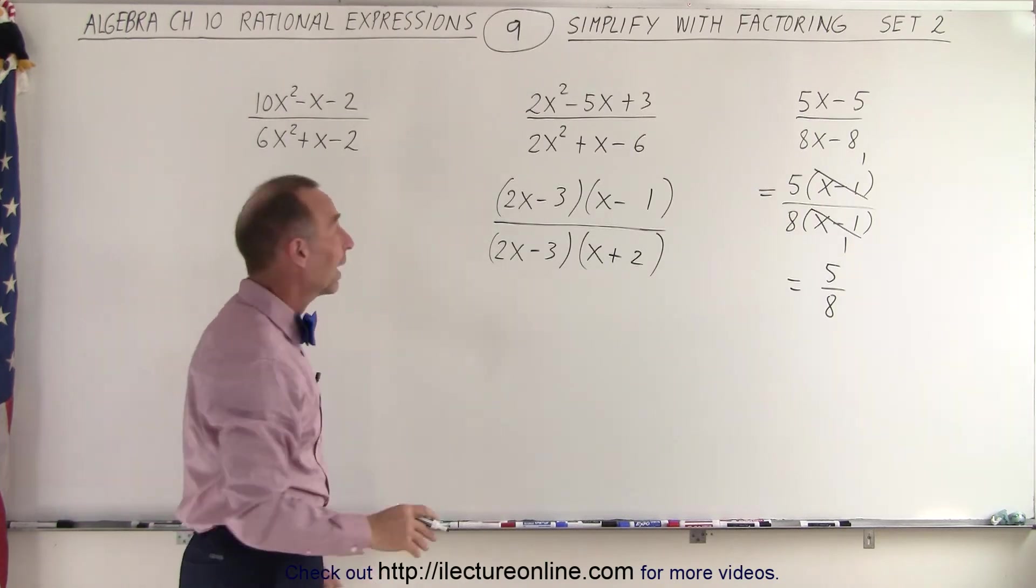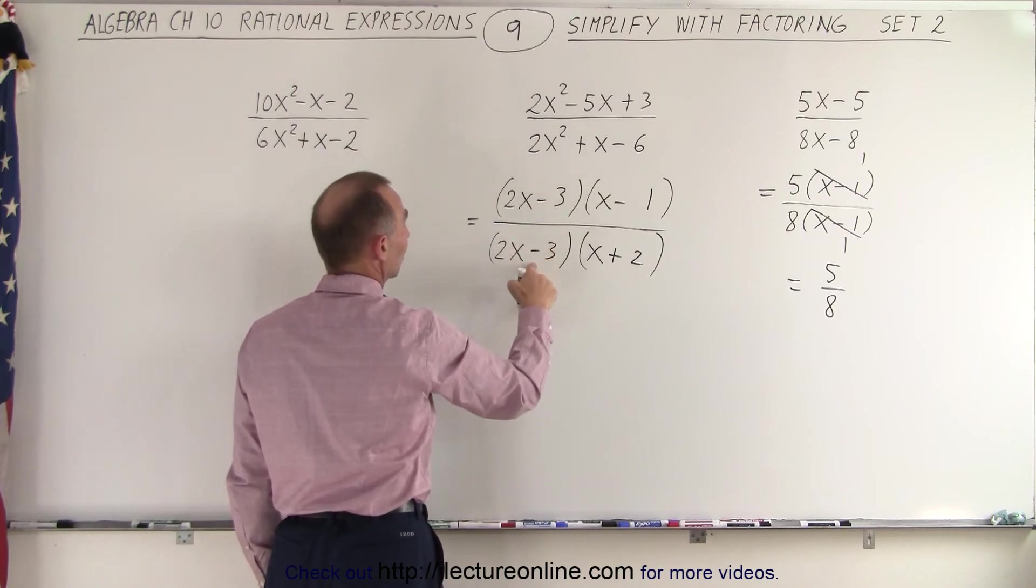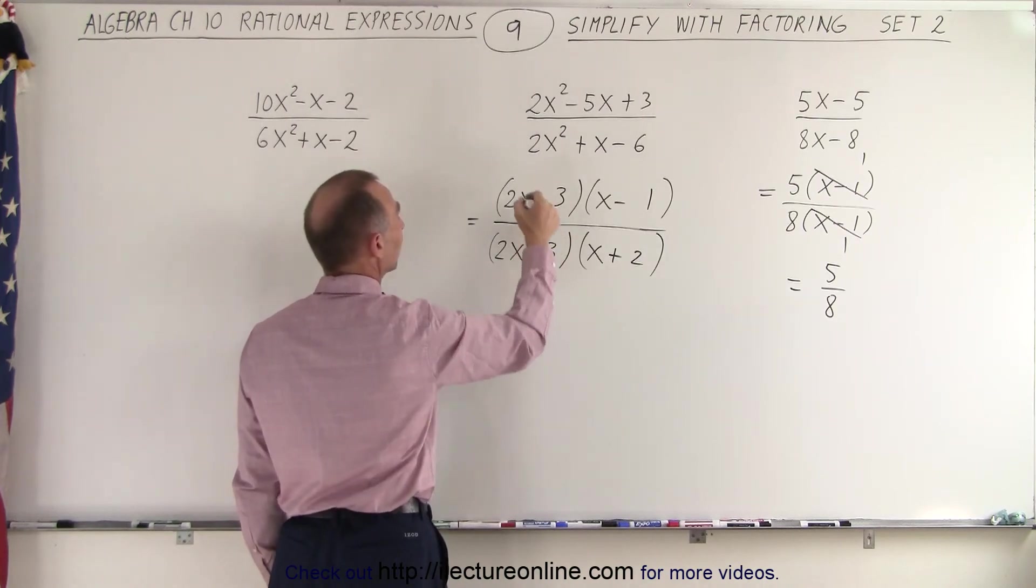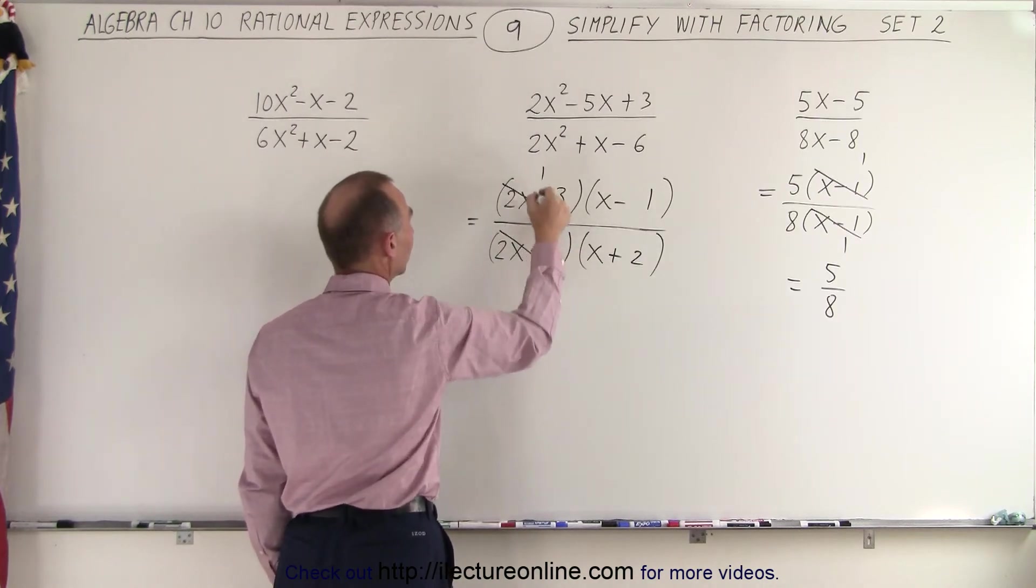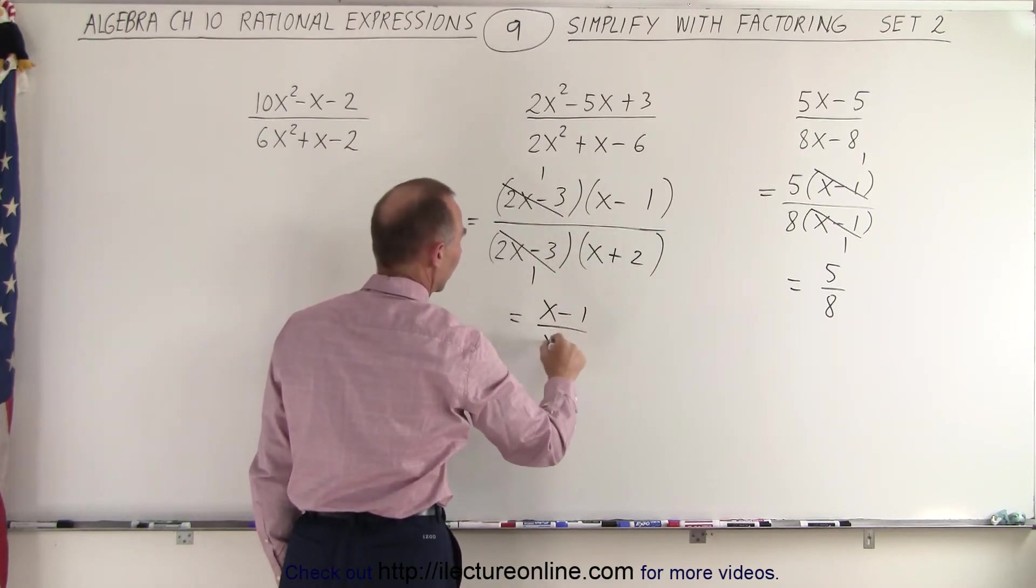Now that we're done with that, we can realize that 2x minus 3 and 2x minus 3 is common for the numerator and the denominator, so we can cancel those out. And we're left with an x minus 1 divided by an x plus 2.